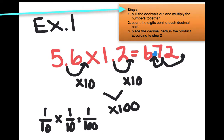We also can just use the steps in front of you: Step 1, pull the decimals out and multiply the numbers together, like 56 times 12. Step 2, count the digits behind each decimal place — there was one digit, two digits total. Step 3, place the decimal in the product according to step 2, so we bring it back in, moving to the left two times. A tenth times a tenth gives me a hundredth. Or: I multiplied by 10 to make it 56, I multiplied by 10 to make it 12 — altogether I multiplied by 100. So the opposite of multiplying is dividing — I need to divide by 100.